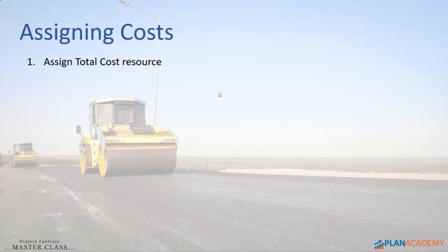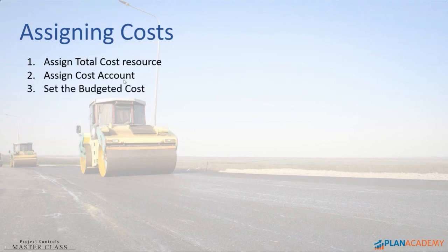Assigning costs. Basically, the process looks like this: I assign a total cost resource to the activity. I also assign a cost account, and then I set the budgeted cost.